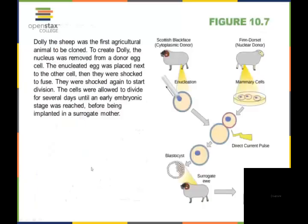Looking at it on a bigger picture, genetic engineering and manipulation has occurred a lot in plants, but we also have done a little bit with animals. And this is where Dolly comes in. Dolly the sheep was the first agricultural animal to be cloned. In order to create Dolly, they took the nucleus that was removed from a donor egg cell.